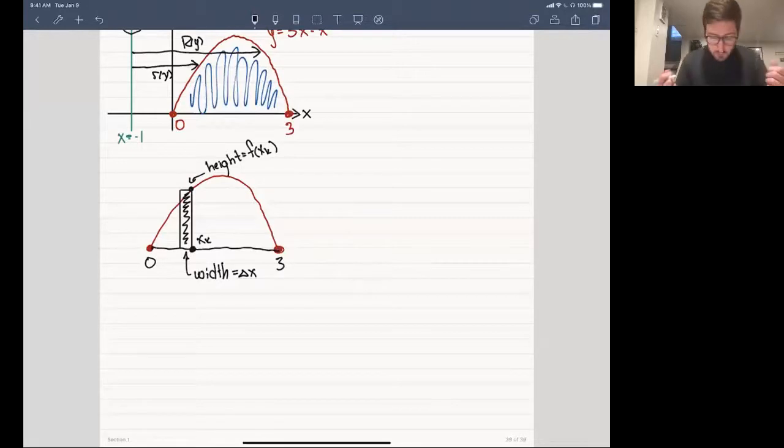Okay, then what do we do? Well, we can approximate the volume of this, what ends up looking like a sort of flan cake sort of object, if you imagine this thing rotated around. You can approximate this thing using these rectangles getting pulled around.